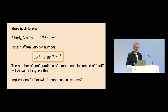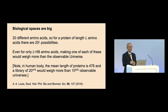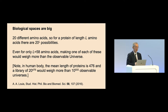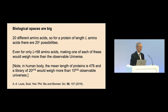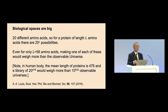If you employed every atom in the universe to make a computer, you still couldn't enumerate all the possibilities. Even with smaller numbers, think about biology: there are 20 different amino acids. If you make a protein of L amino acids, there are 20^L possibilities. A protein of length 58 — making just one molecule of each possible type — would have a combined weight greater than the observable universe. In the human body the mean protein length is 476, so you'd need 10^500 observable universes to make one of each. Richness emerges even with relatively small numbers when you take exponentials and powers.